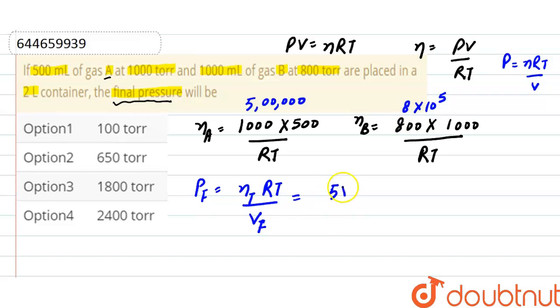So it will be 5 into 10 raised to the power 5 plus 8 into 10 raised to the power 5, divided by RT.